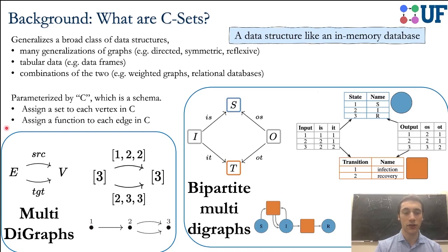We also can do bipartite multi-graphs. This is going to have an edge set, two different edge sets and two different vertex sets, which we could call states and transitions. We could call the edges inputs and outputs and represent them like this. This is something that can represent Petri nets, which represent chemical reaction networks or epidemiological models. You can see how this is characterized as a database as well, in addition to a nice visual representation.